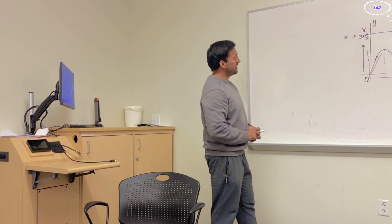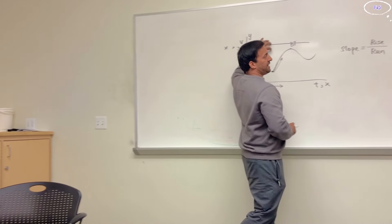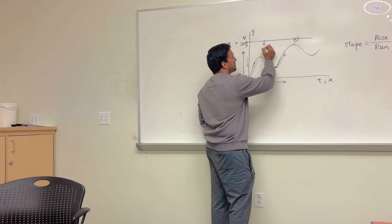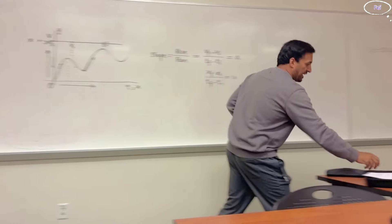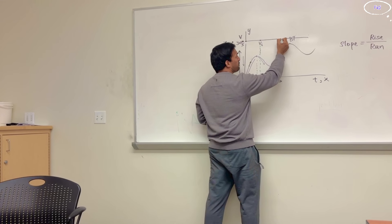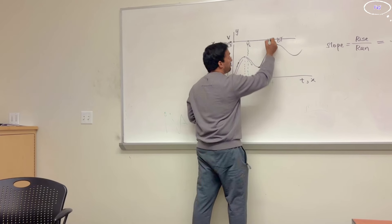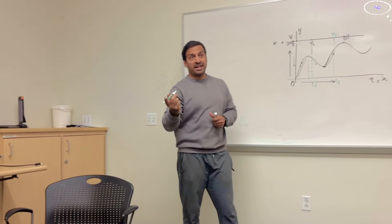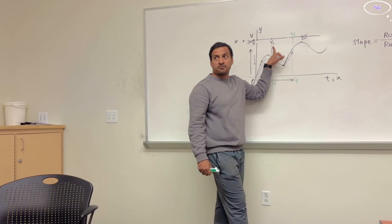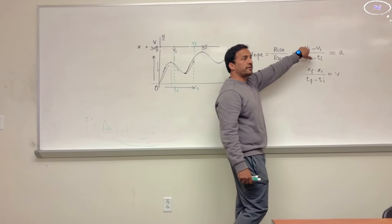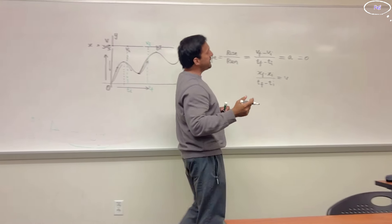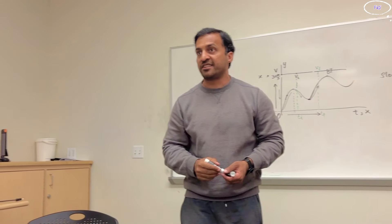This is all the information we need to solve the second problem. Let's consider a straight line on a VT graph. If velocity is constant — meaning vf equals vi — then the numerator (vf − vi) is zero, so acceleration is zero. We conclude: if an object moves at constant speed, acceleration is zero. Also, if the object is at rest, initial and final speed are both zero, so acceleration is also zero.